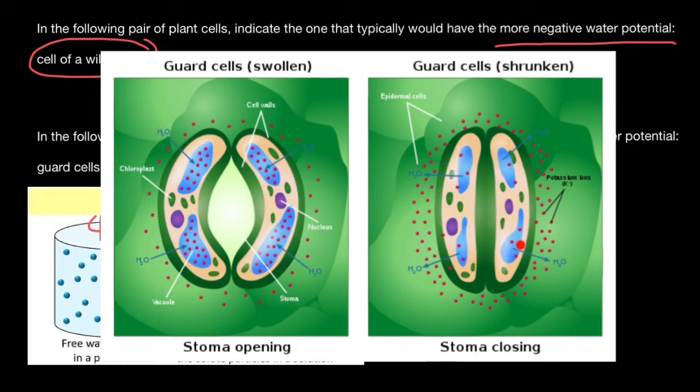out of this vacuole, to the epidermal cells. And guard cells would be flaccid and would close.